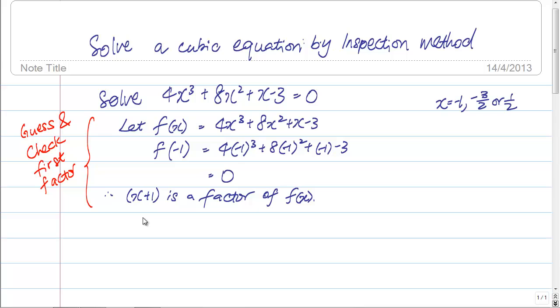I'm going to show you what I mean by inspection method. This is the cubic equation that is given to us. We have also found out the first factor, which is x plus 1. Now, what is remaining at the back here? Since you have a linear factor here, in order to get a cubic equation, we need a quadratic factor at the back here. And this will be the standard form of how quadratic look like.